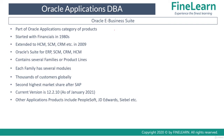Oracle E-Business Suite is basically a category of products in Oracle, and it started with financials in the 1980s. Then they slowly extended it to HCM, SCM, and CRM in 2009. So Oracle E-Business Suite is nothing but a suite of ERP, SCM, CRM, and HCM. Basically, Oracle E-Business Suite provides you the functionality of an ERP, supply chain management software, CRM software, and also HCM software — that is Human Capital Management, or HR.